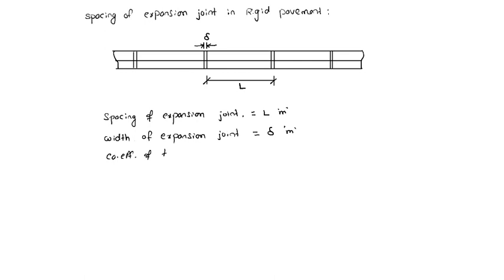Coefficient of thermal expansion equals alpha per degree centigrade. Assuming 50 percent compressibility of material in the joint, that is 0.5 delta. Whatever material is placed in the expansion joint, that material will compress 50 percent.